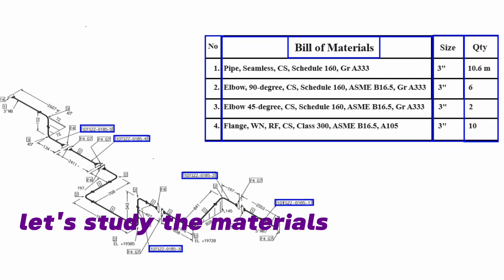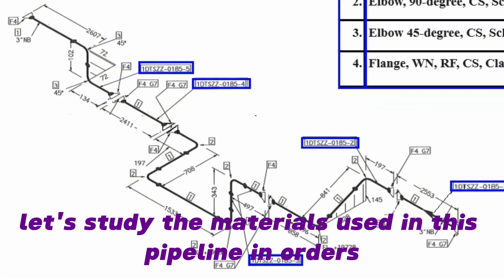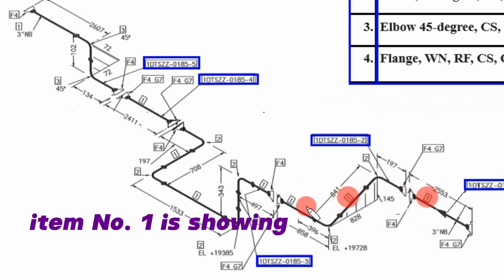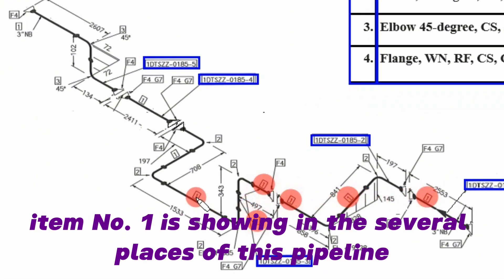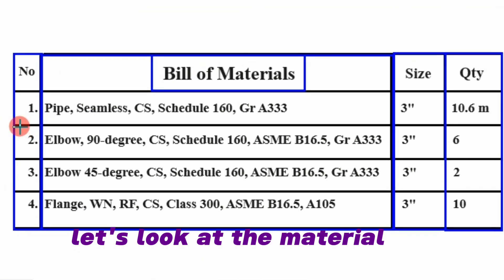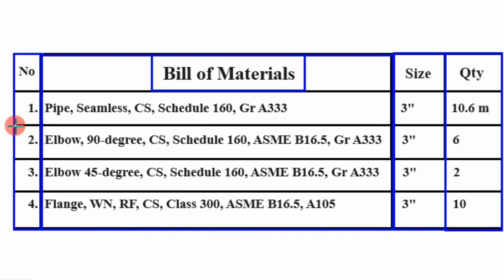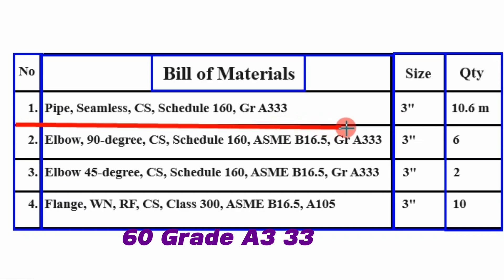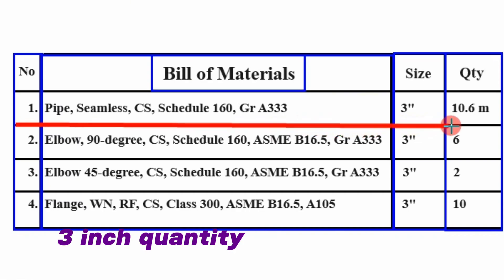Let's study the materials used in this pipeline in order. Item number 1 is shown in several places of this pipeline isometric drawing. Item number 1: Pipe, seamless, carbon steel, schedule 160, grade A333, size 3 inch, quantity 10.6 meters.